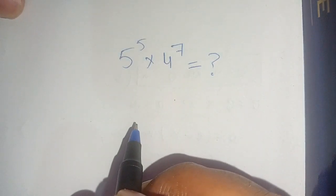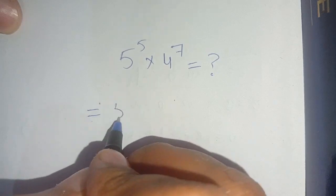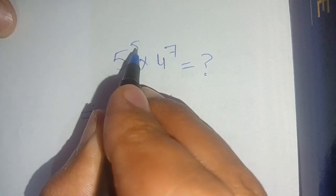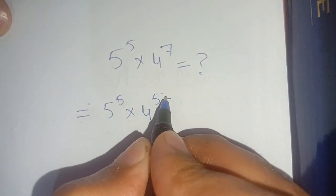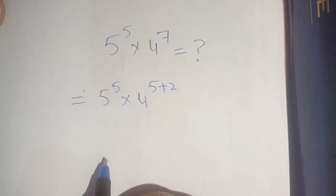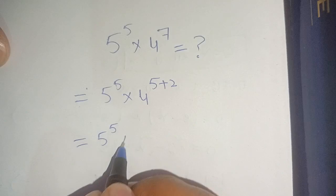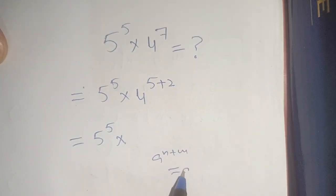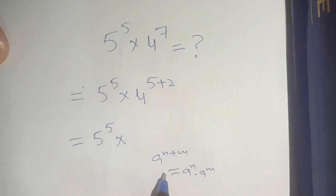To compute 20 raised to power 7 without using any calculator, we can write it as 5 raised to power 5 times 4 raised to power 7. The exponent 7 can be broken down in terms of 5 as 5 plus 2. We know that a raised to power n plus m equals a raised to power n times a raised to power m, where here a is 4, n is 5, and m is 2.